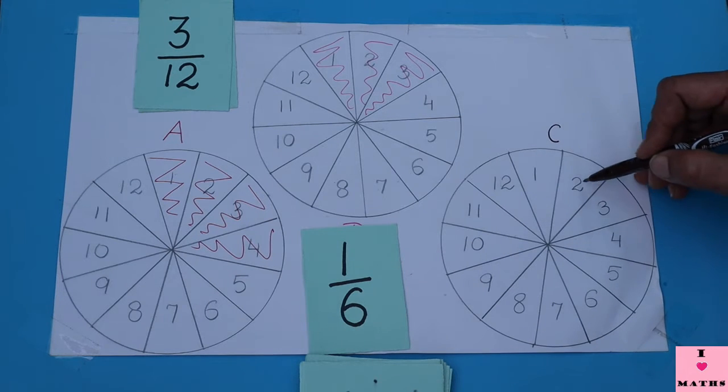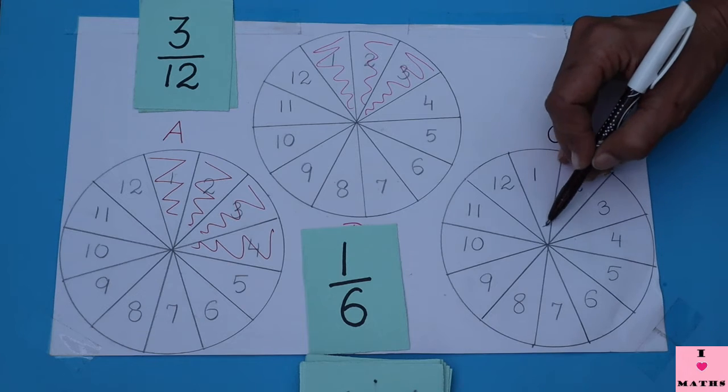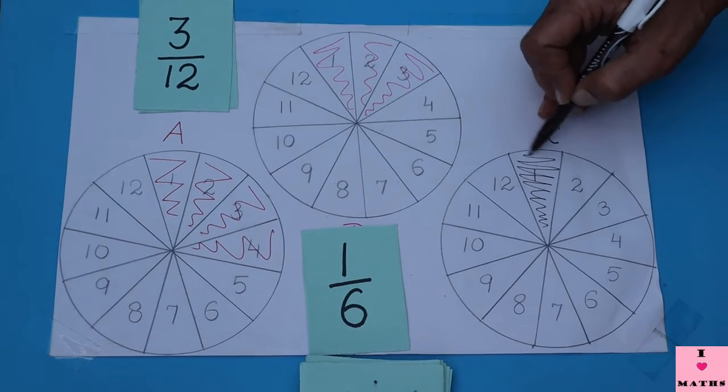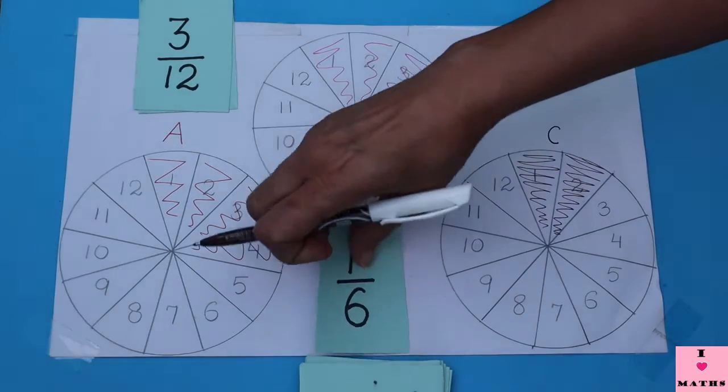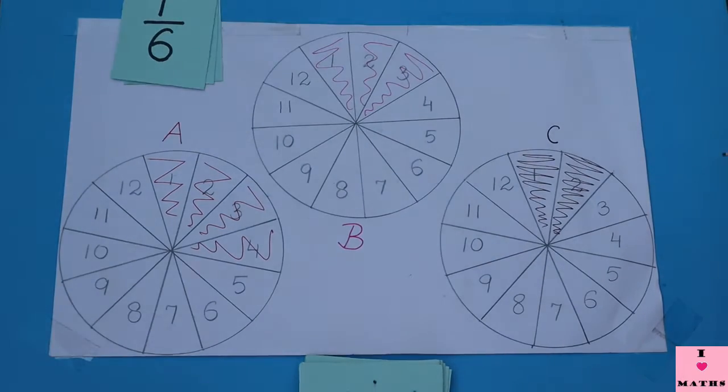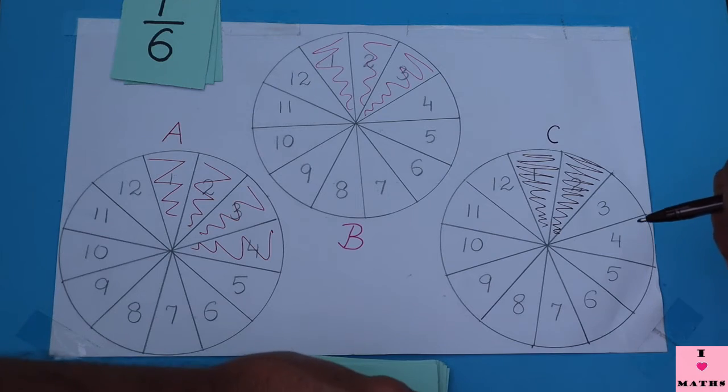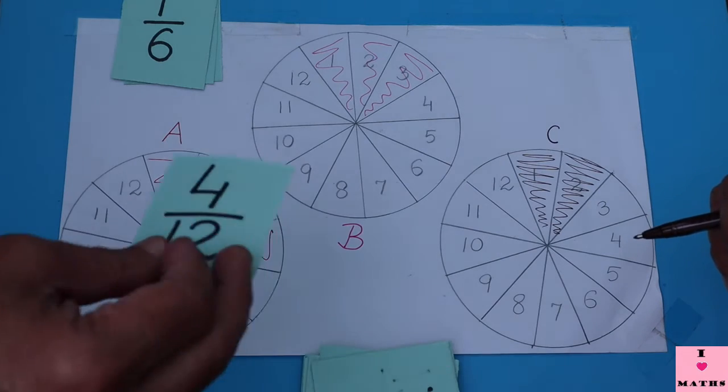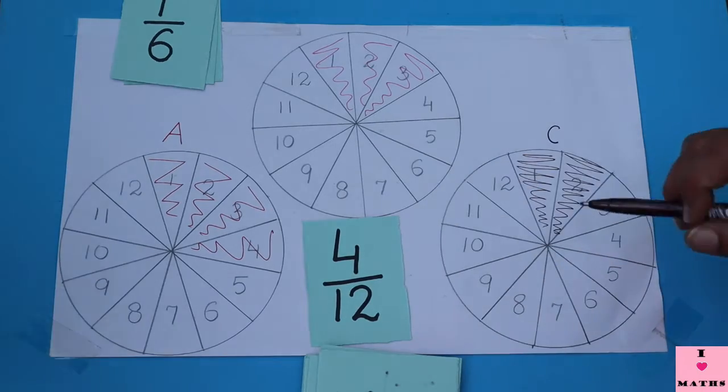Now it is the turn of A. 4 out of 12 is very easy. Next 4 parts will be colored.